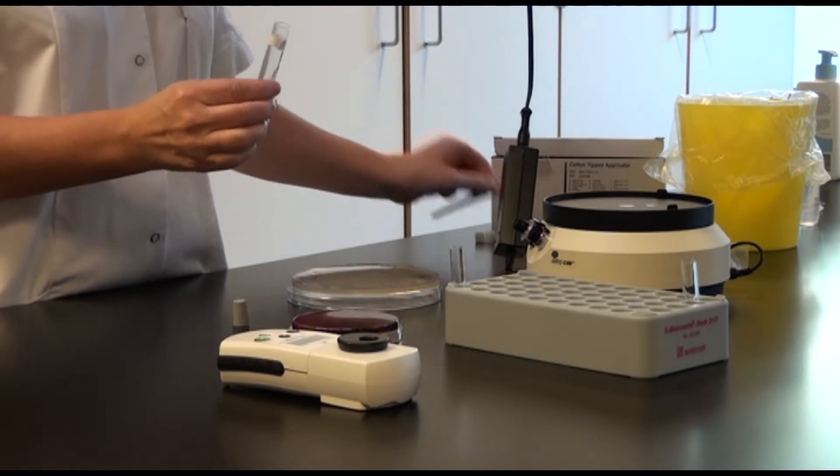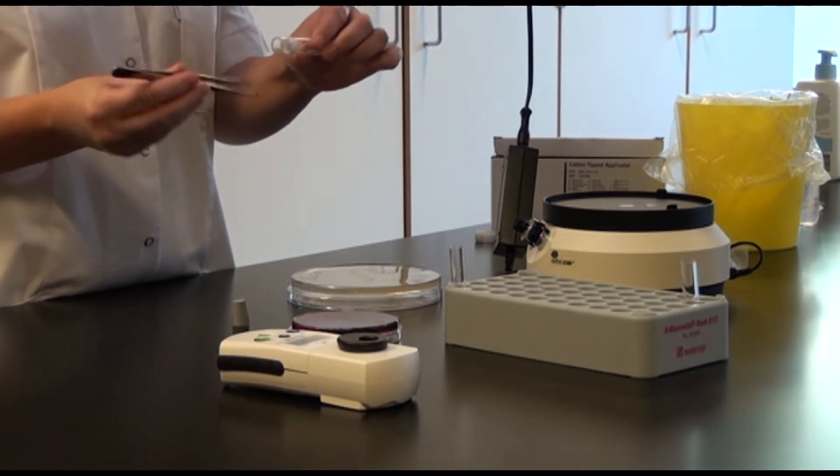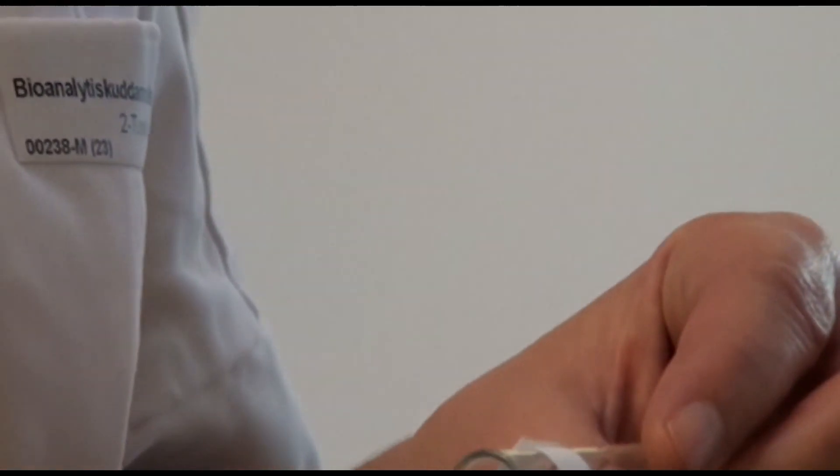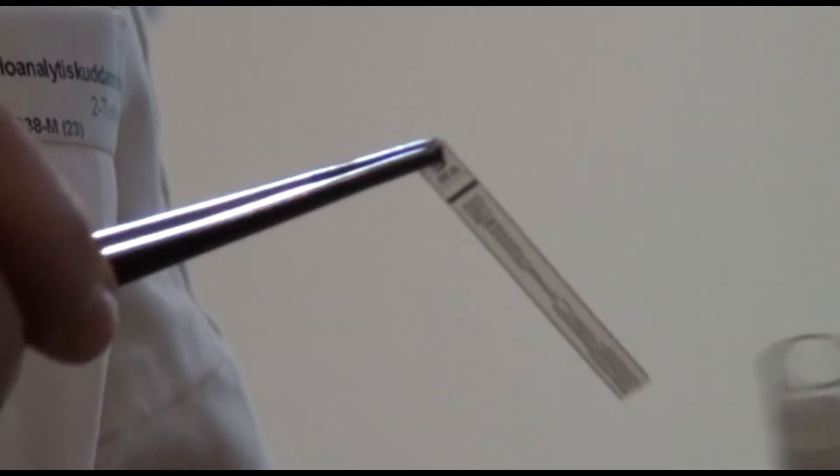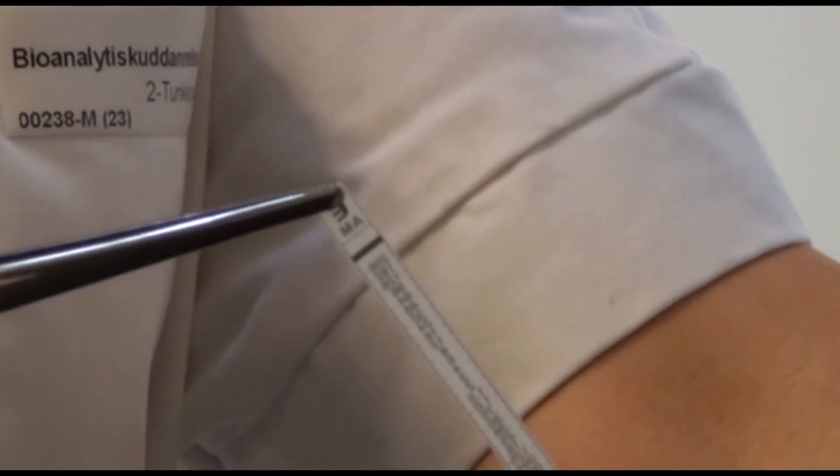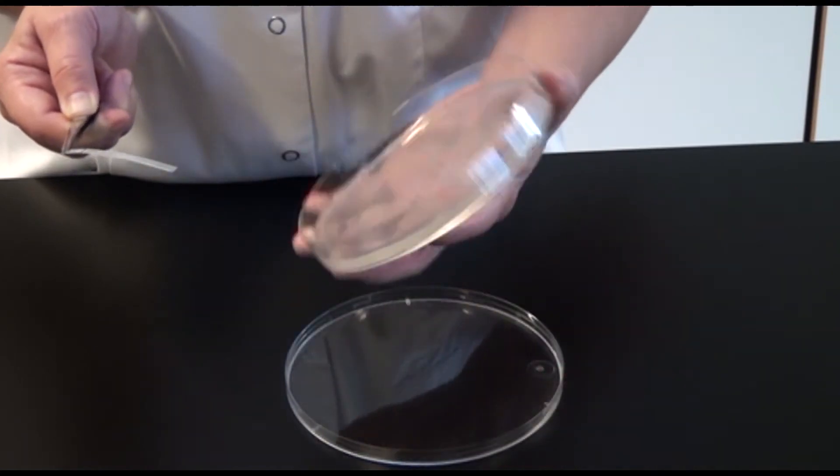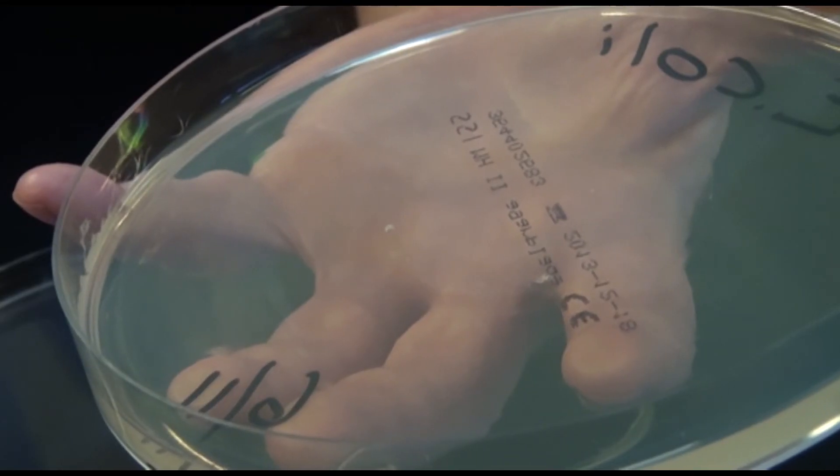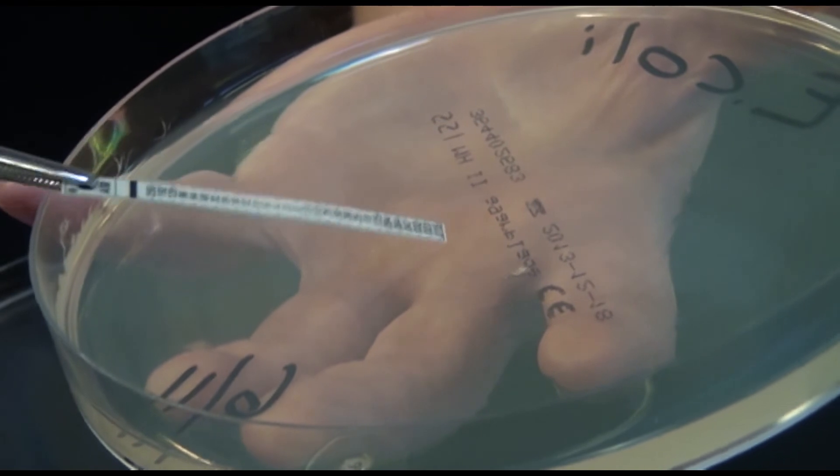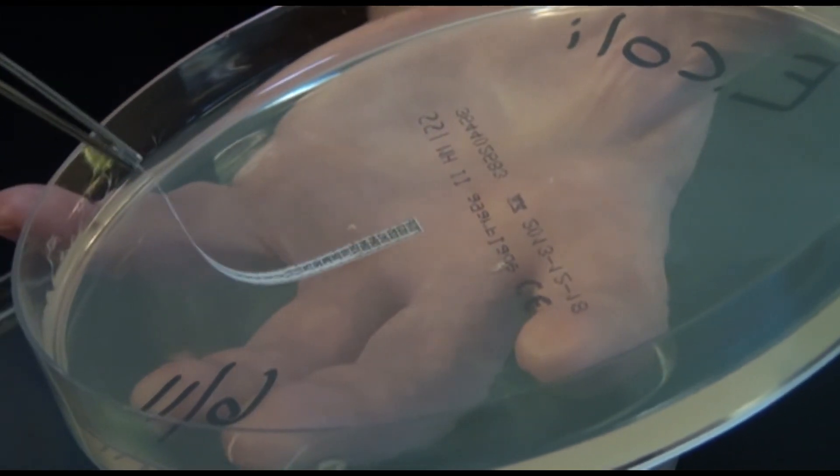An E-test is picked up with the pincet and be completely certain that you only have one. The E-test is placed on the plate with the highest concentration of antibiotics facing toward the edge, and be completely certain that there are no bubbles underneath.